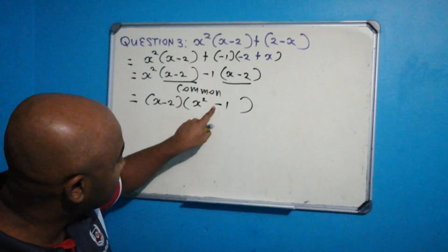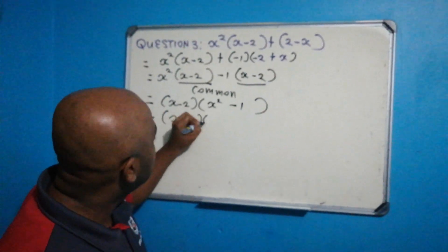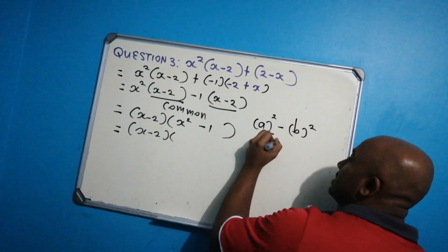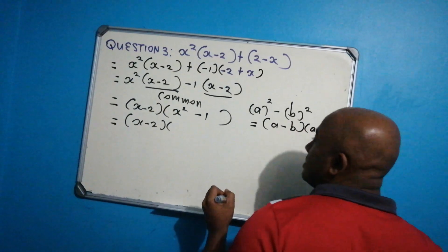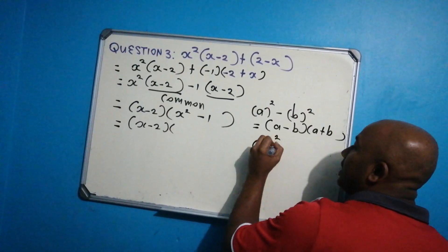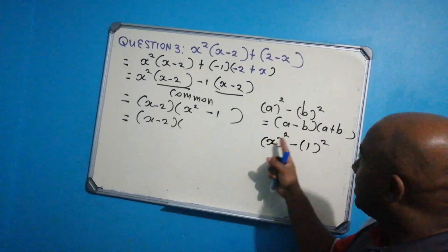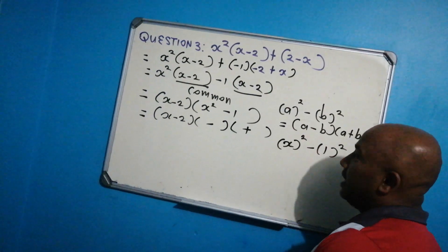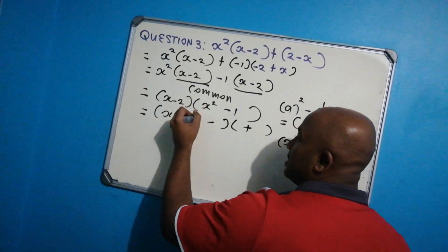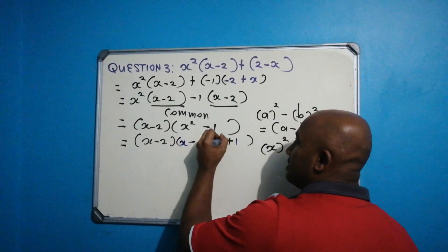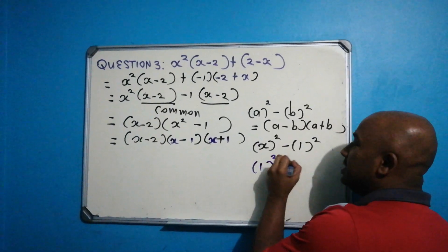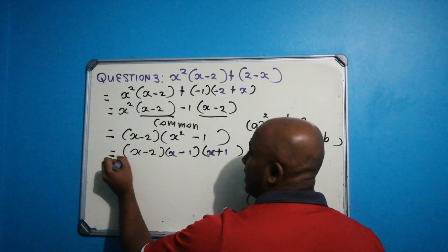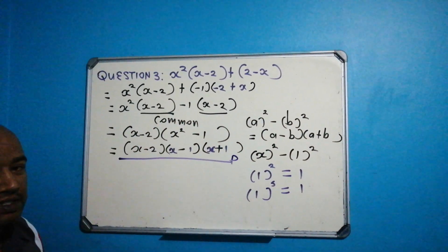Yes — we have x squared minus 1, which is the difference of two squares. It's in the form a squared minus b squared, which equals a minus b times a plus b. Here, a is x and b is 1, so x squared minus 1 squared gives us x minus 1 times x plus 1. Remember, 1 to the power of anything equals 1. So our final fully factorized answer is x minus 2, times x minus 1, times x plus 1 — these are our prime factors and it cannot be factorized any further.